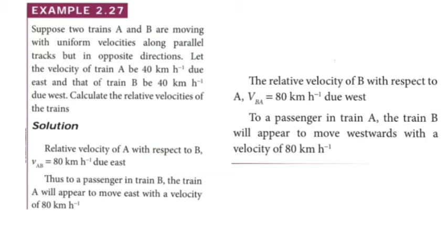The formula for relative velocity of A with respect to B gives 80 km/h. For B with respect to A, the formula is minus V_A plus V_B. Adding VA and VB in opposite direction: first case is 80 km/h east direction, opposite west. This is the solution for example number 2.27.